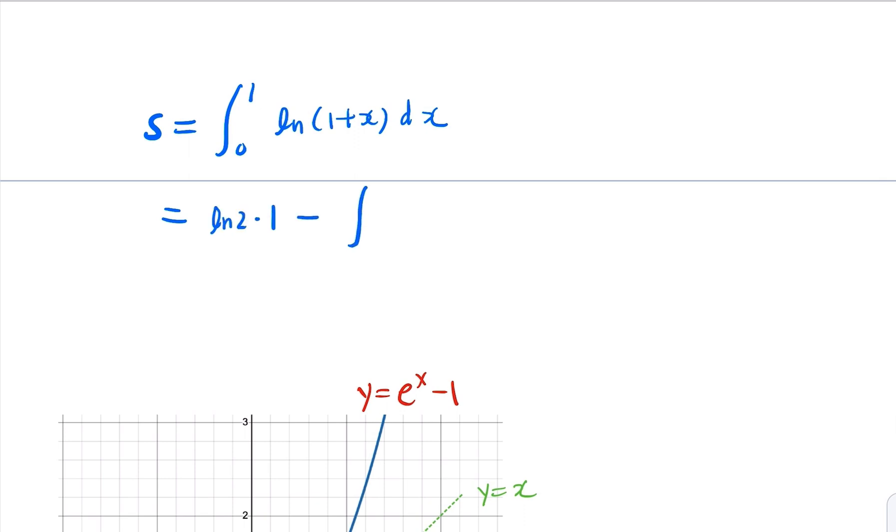Minus the integral of the exponential, it's going to be from 0 to log 2, of e to x minus 1. Of course, for this one you know that that's just the e to x minus x, with the integral from 0 to log 2.